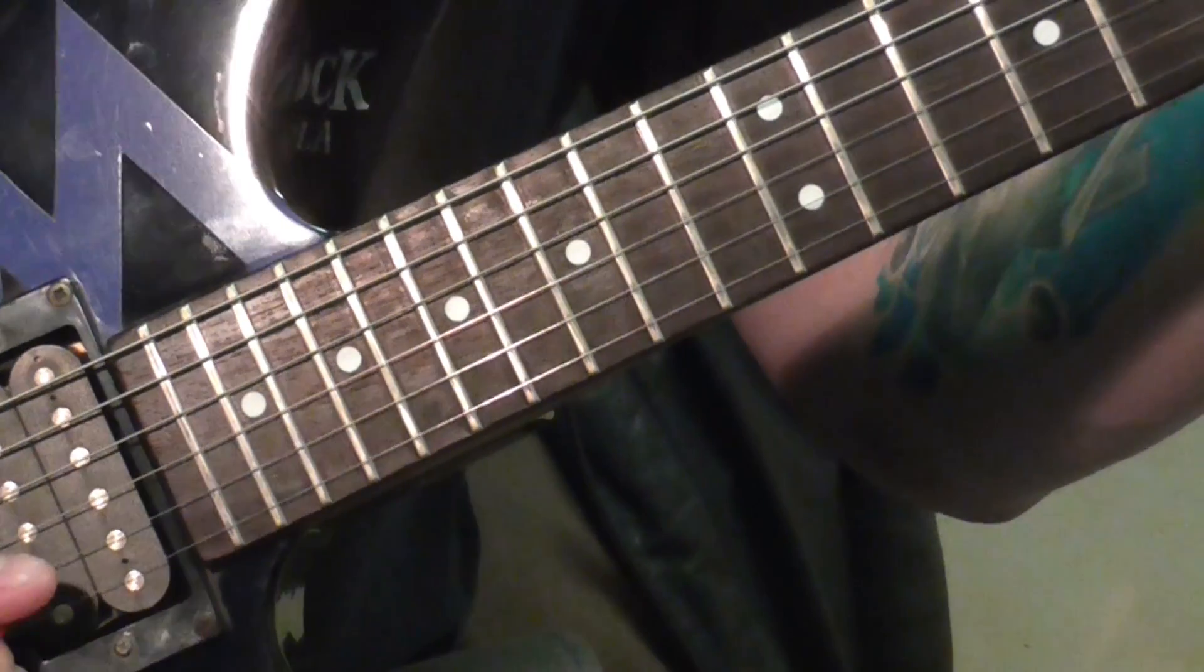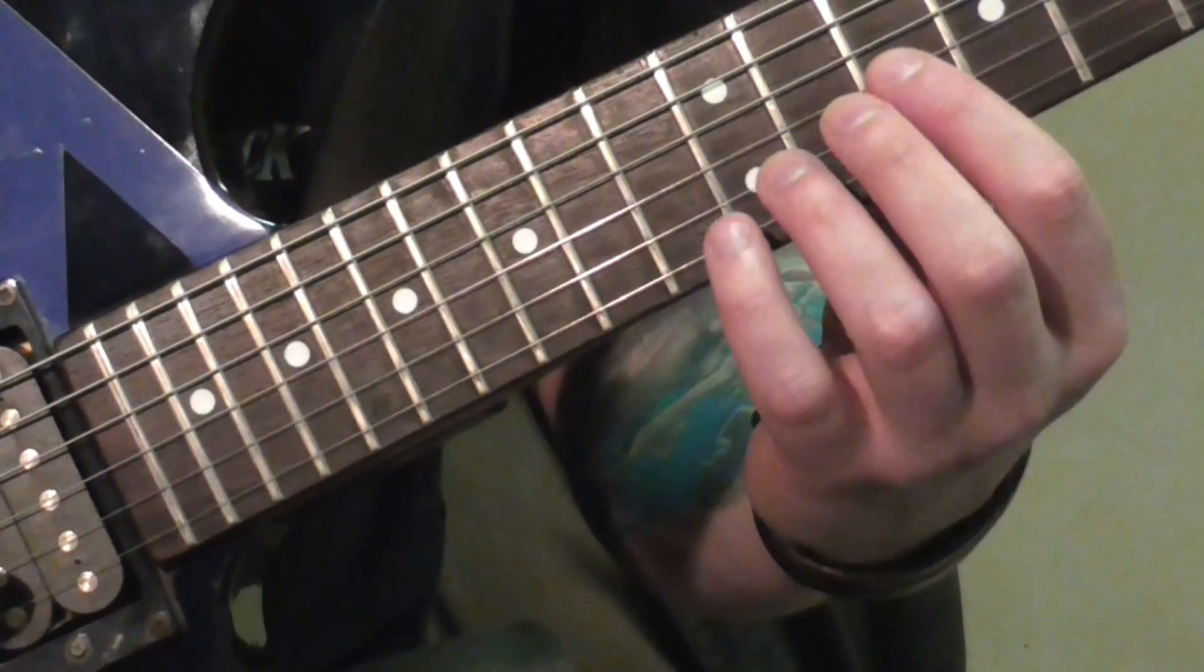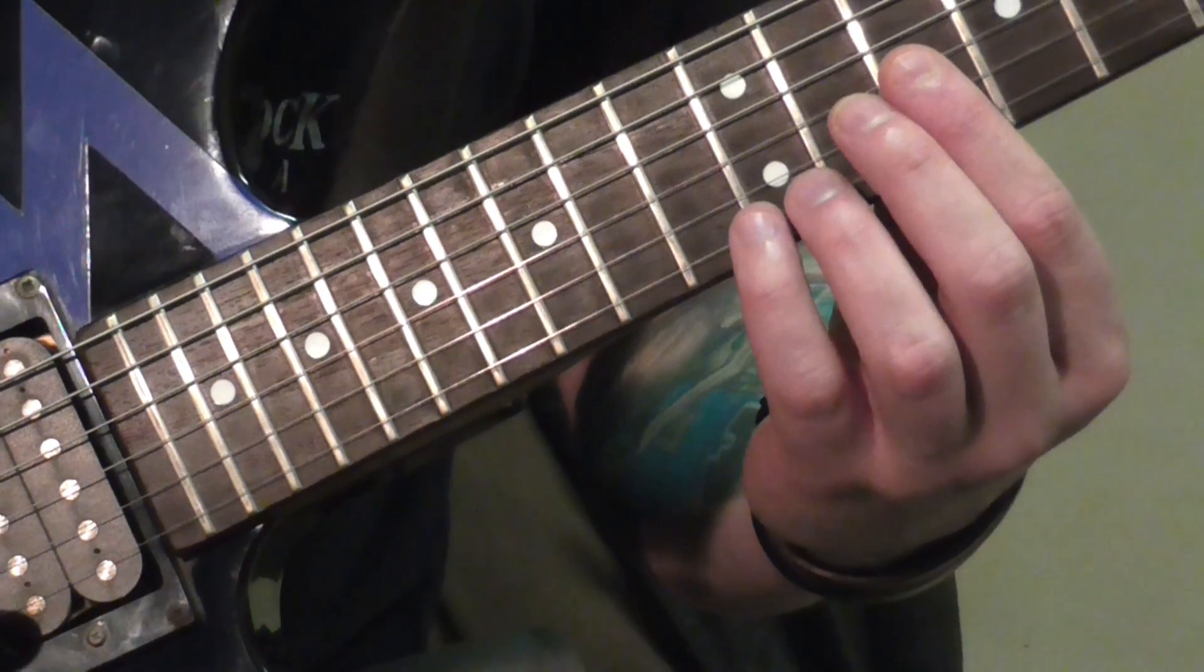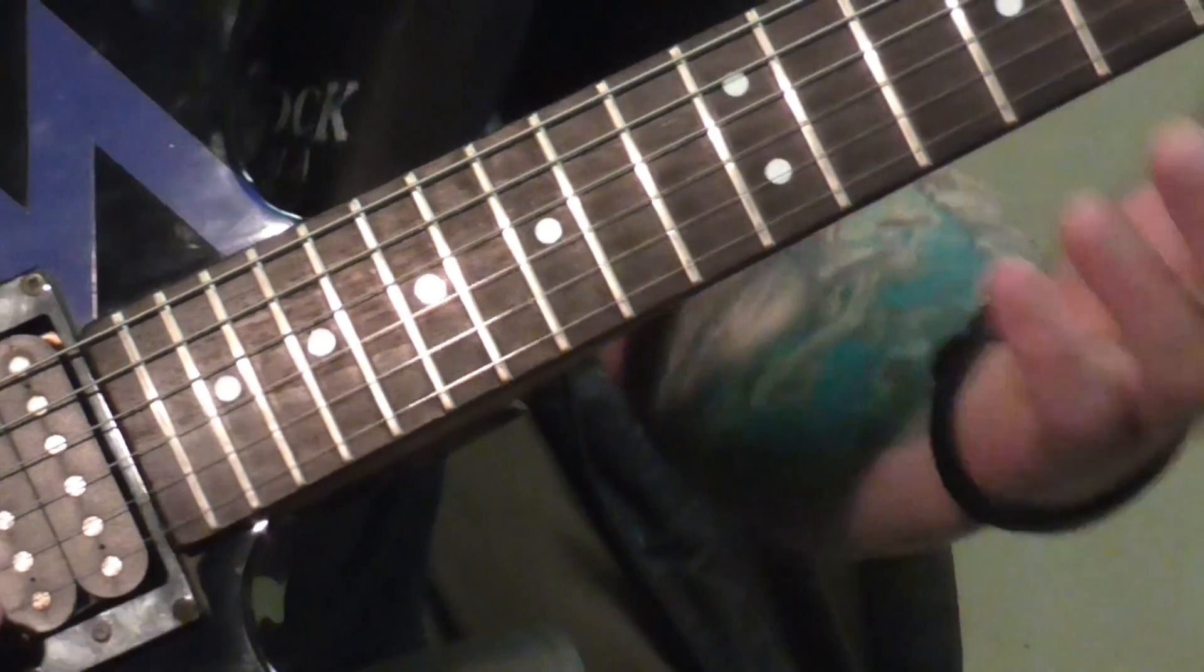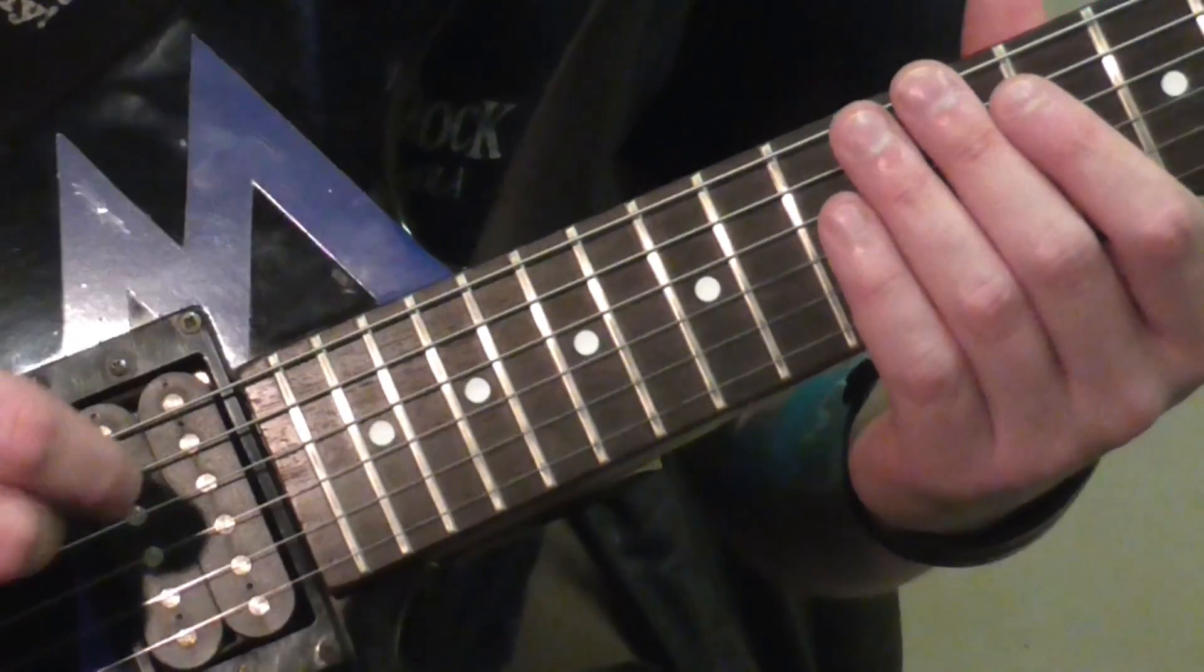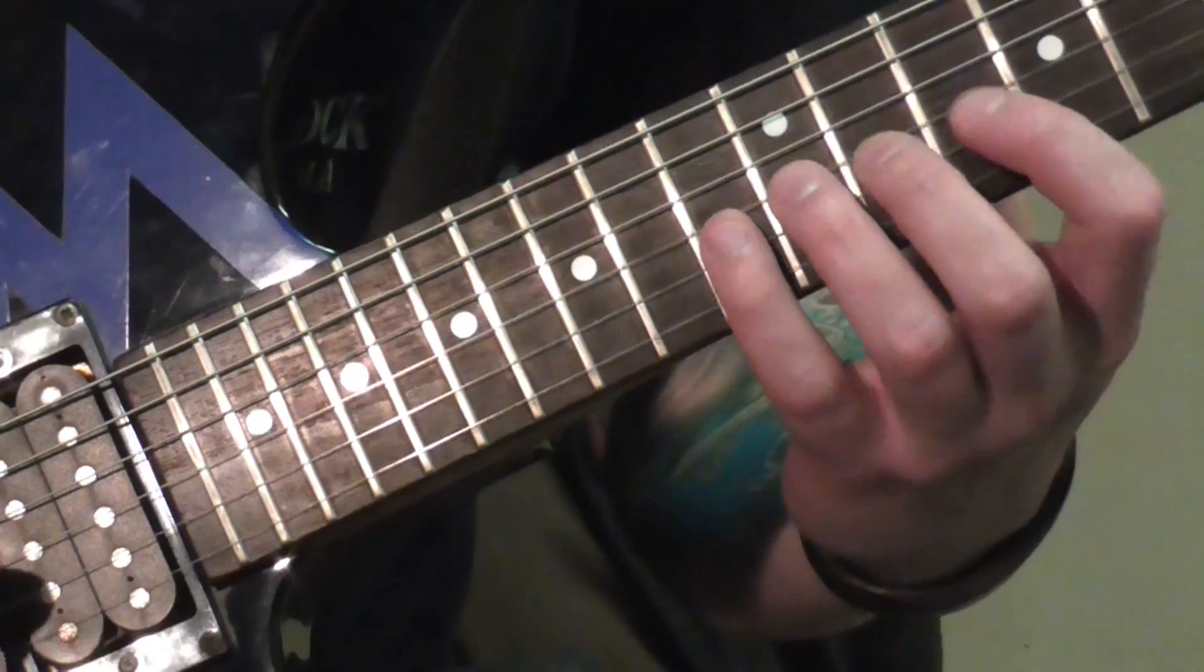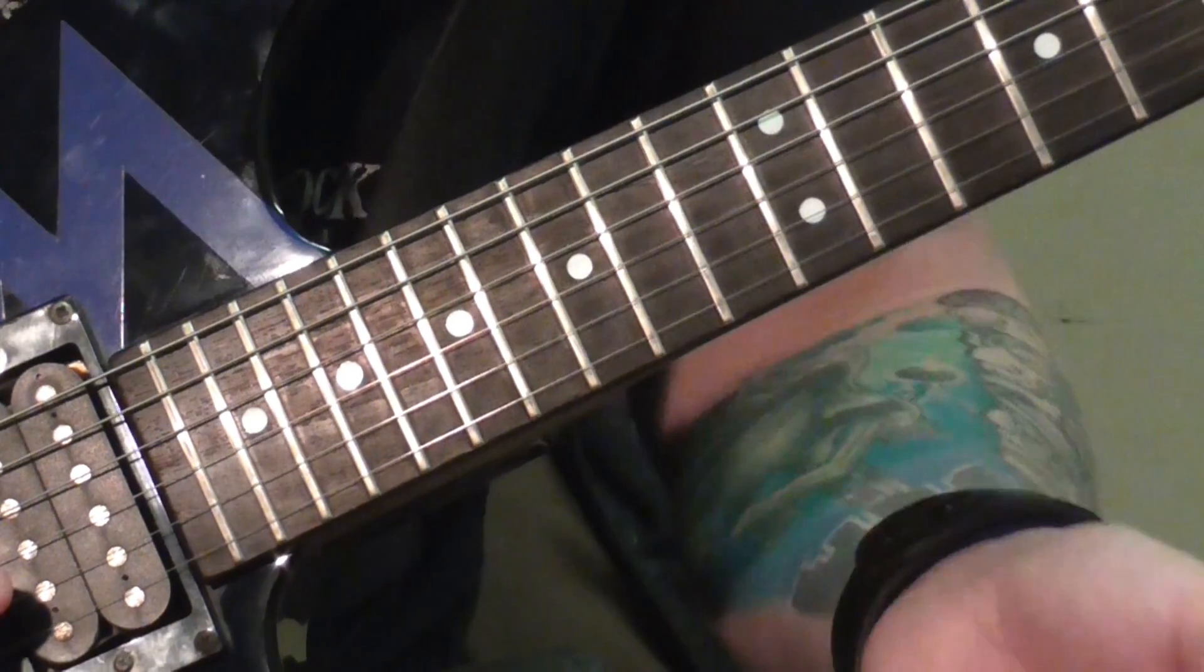You're going to want to put your index finger on the 10th fret of the G string, and the B and E strings are going to be muted under the flesh of your index finger. The D, A, and low E strings are going to be muted under your picking hand, and the only string we're going to be tapping on is the G string.